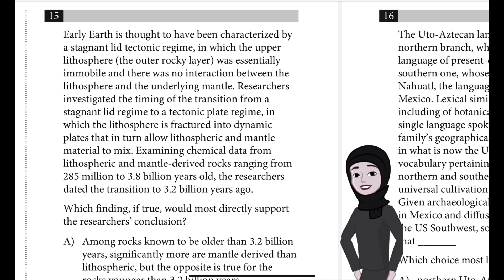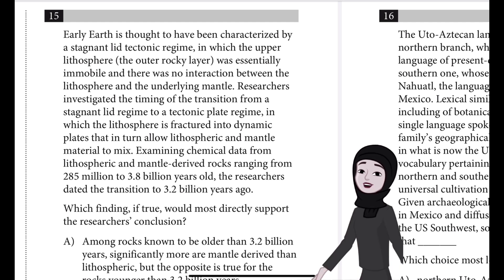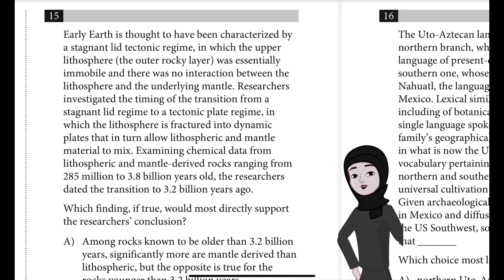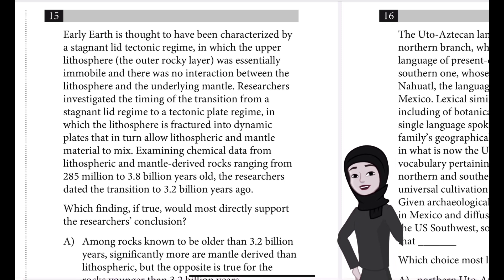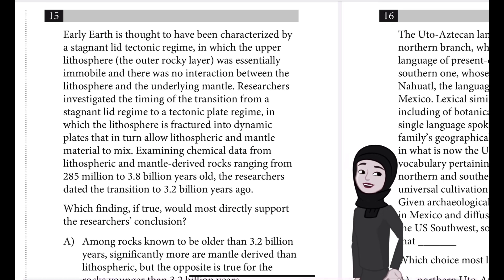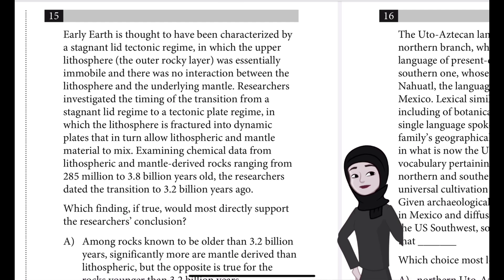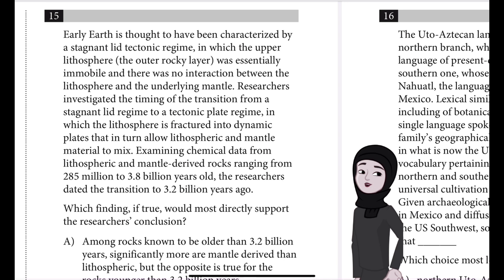Early Earth is thought to have been characterized by a stagnant lid tectonic regime in which the upper lithosphere, the outer rocky layer, was essentially immobile, and there was no interaction between the lithosphere and the underlying mantle. Researchers investigated the timing of the transition from a stagnant lid regime to a tectonic plate regime in which the lithosphere is fractured into dynamic plates that in turn allow lithospheric and mantle material to mix.